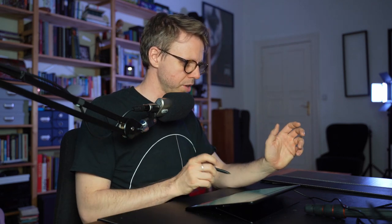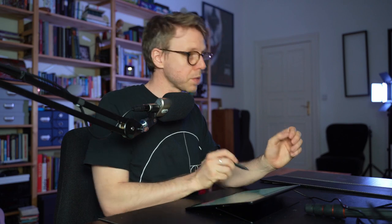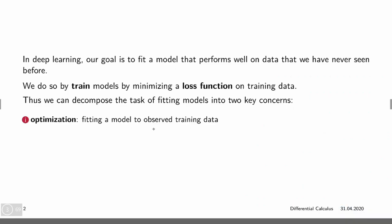Now, there are two main concerns around this. The first one is optimization — we're fitting a model on this observed training data, and then we hope that we can take this model and generalize to unseen data. There are some mathematical principles behind this, but largely in deep learning, this is guided by practitioners' wisdom and, of course, statistics.